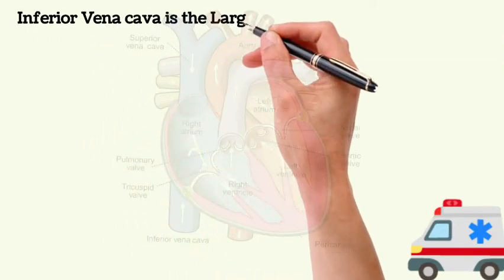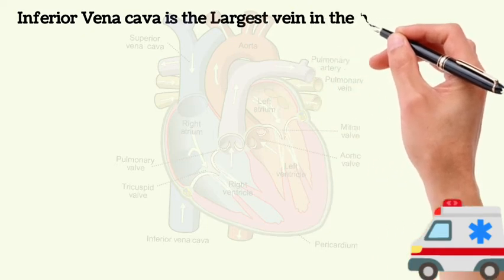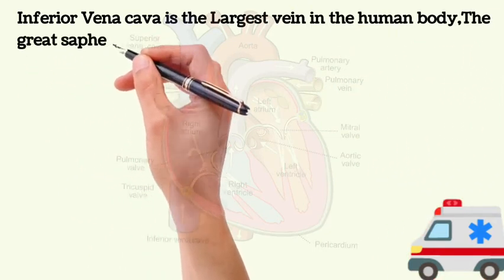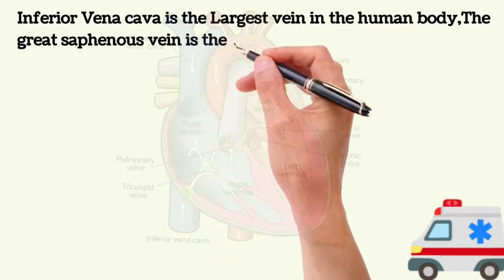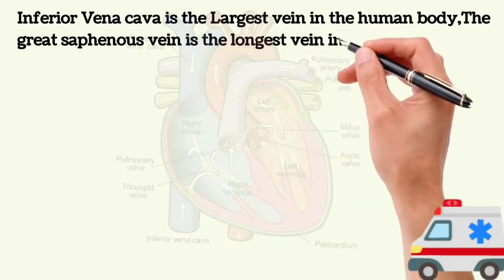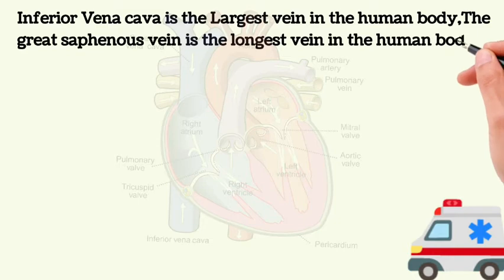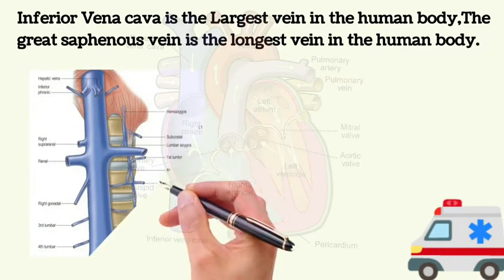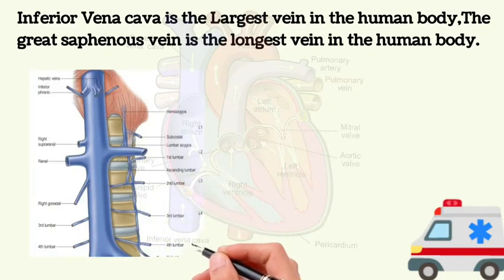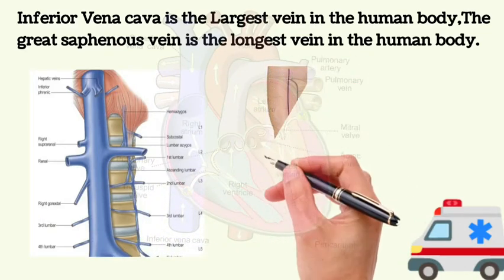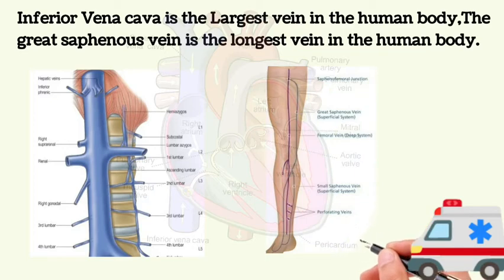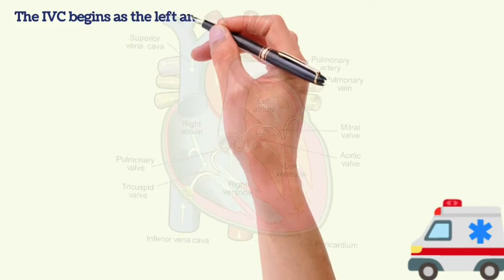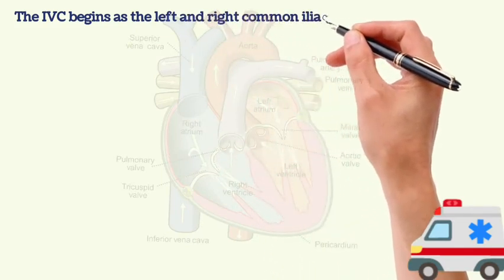Welcome to the channel. Today I would like to talk about the inferior vena cava — I will discuss some anatomical and important clinical points. The inferior vena cava is the largest vein in the human body, while the great saphenous vein is the longest vein in the human body.